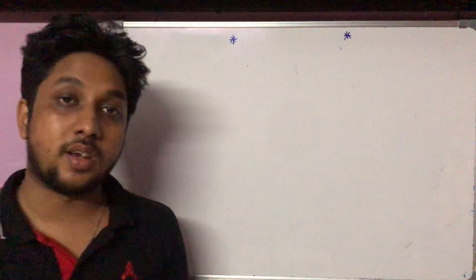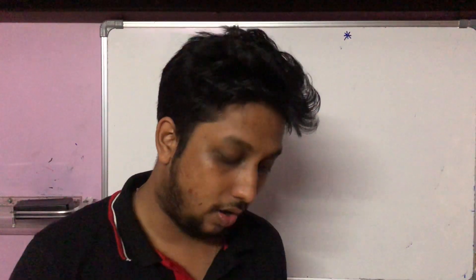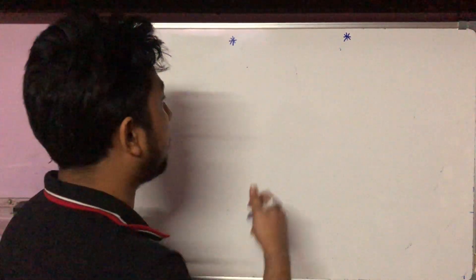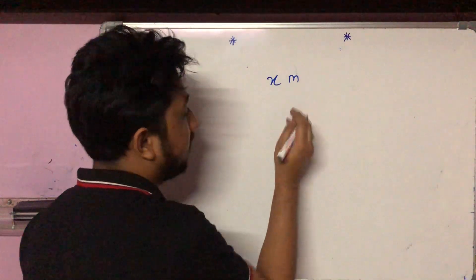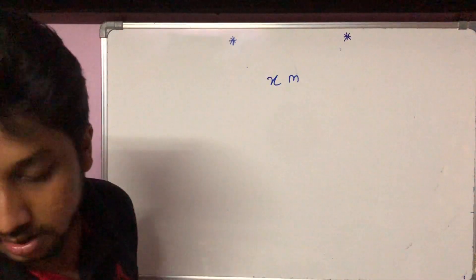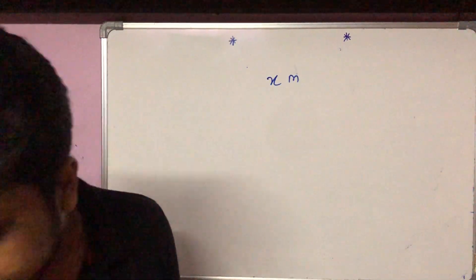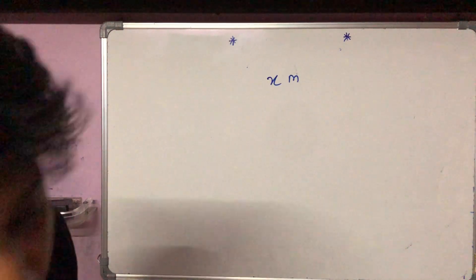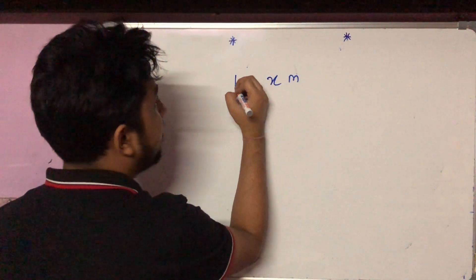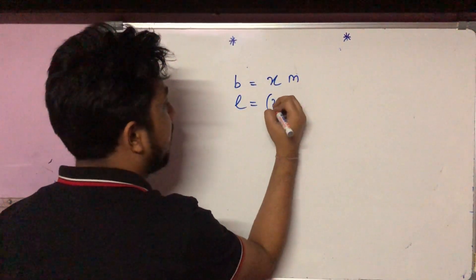Question number 18 of the chapter test: the length of a rectangular garden is 12 more than its breadth. The numerical value of the area is equal to 4 times the numerical value of the perimeter. Find the dimensions of the garden. Let the breadth be x meters, and the length will be 12 meters more, that means x plus 12.